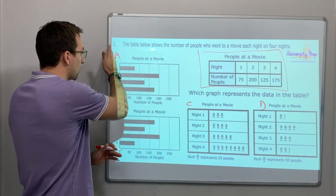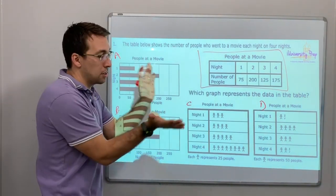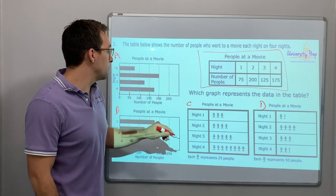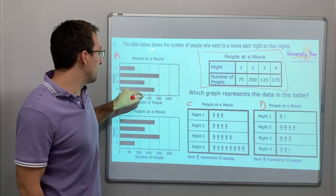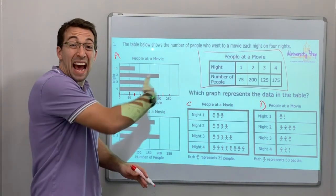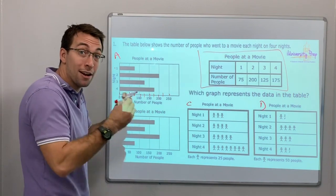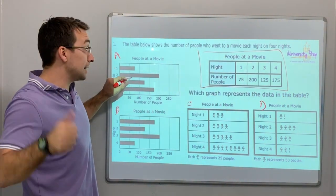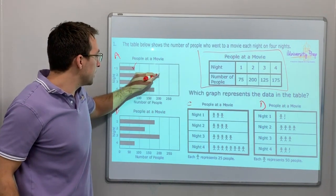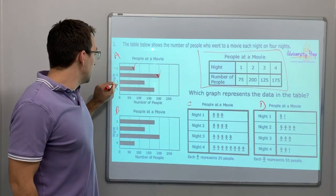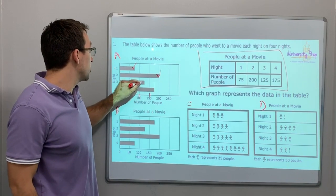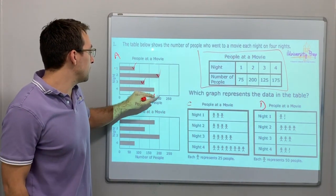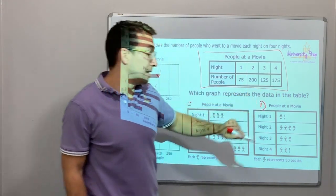Here's our x-value and our y-value. Remember, all of these graphs compare two different values simultaneously. The y-axis goes 0, 50, 100, 150, 200, 250 — so we can find halfway points: 25, 75, 125, 175. When you take your test, write on your test. Night 1 is in between 50 and 100 — that is 75, accurate. Night 2 is 200, all the way to this line — perfect. Night 3 is in between 100 and 150, so that is 125. And Night 4 is 175. A is correct — A is our answer.